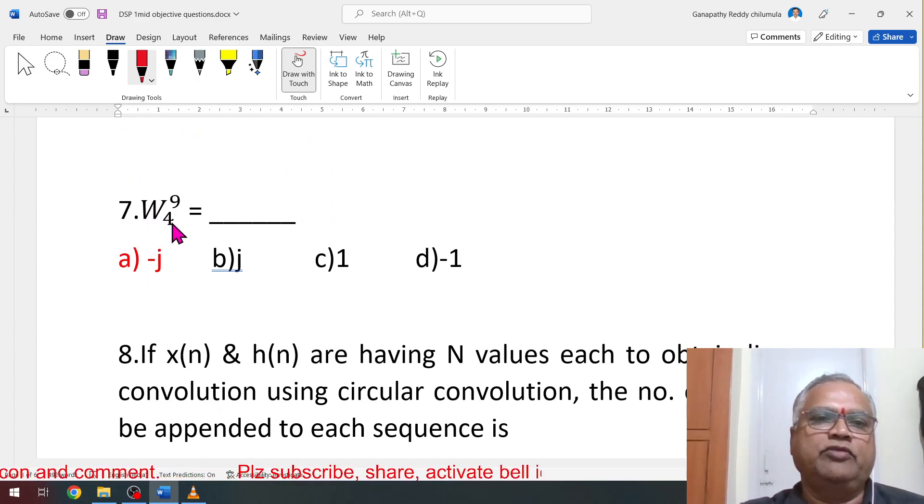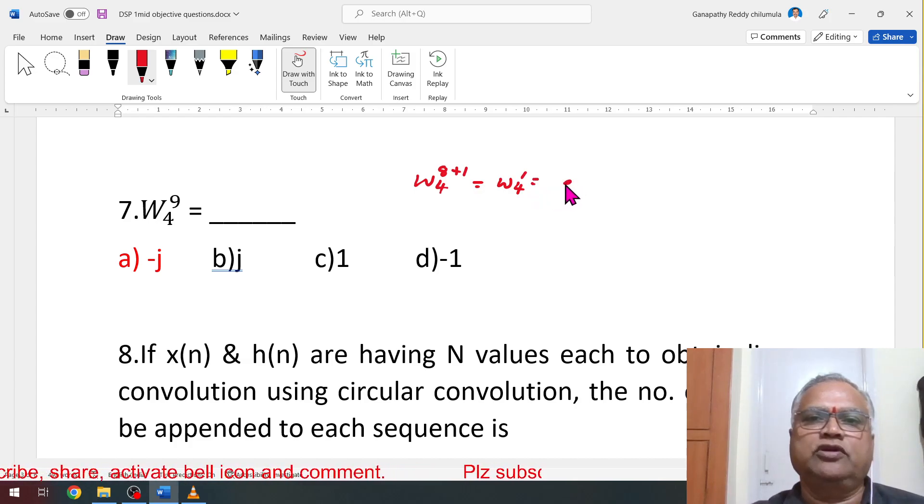And what is the value of W_4^9? This W_4^9 can be simplified like this: W_4^(8+1), which is equal to W_4^1. This is equal to e^(-j2π/4). Simplify you will get minus j.